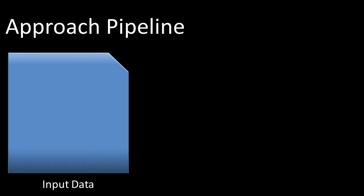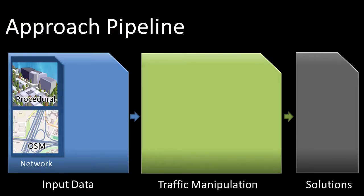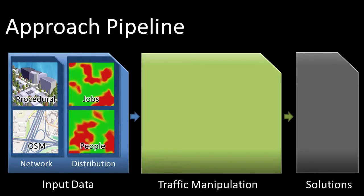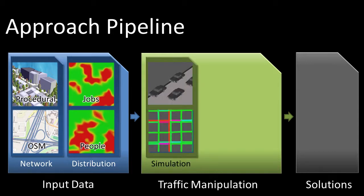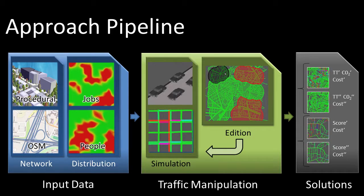In our work, we take as input a road network and a distribution of people and jobs. We then couple a novel and fast traffic micro-simulation with a traffic manipulation framework to automatically compute a 3D model that yields an interactively specified traffic flow behavior.